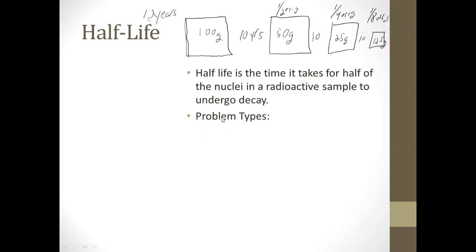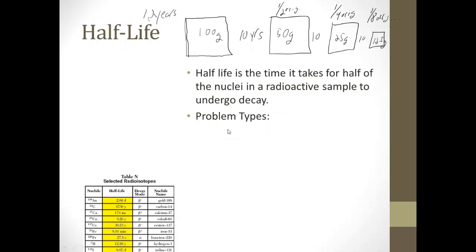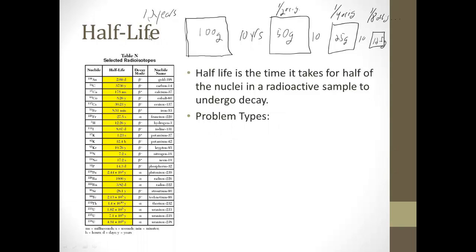So there's different problem types that we're going to have to learn how to solve, and they're all based on table N, which is selected radioisotopes, and this column here has half-lives of all sorts of different things. And anytime you're given a question on the regents about half-life, you're going to find the info you need right here on table N.